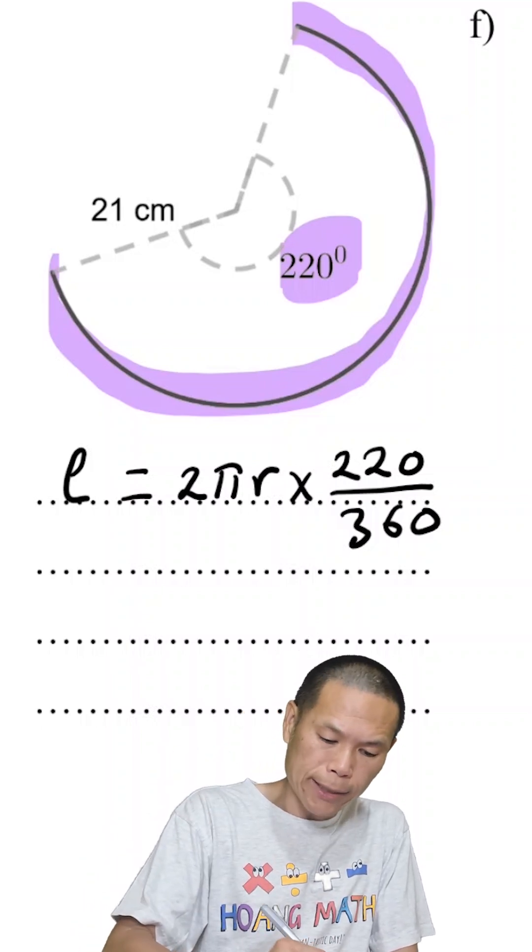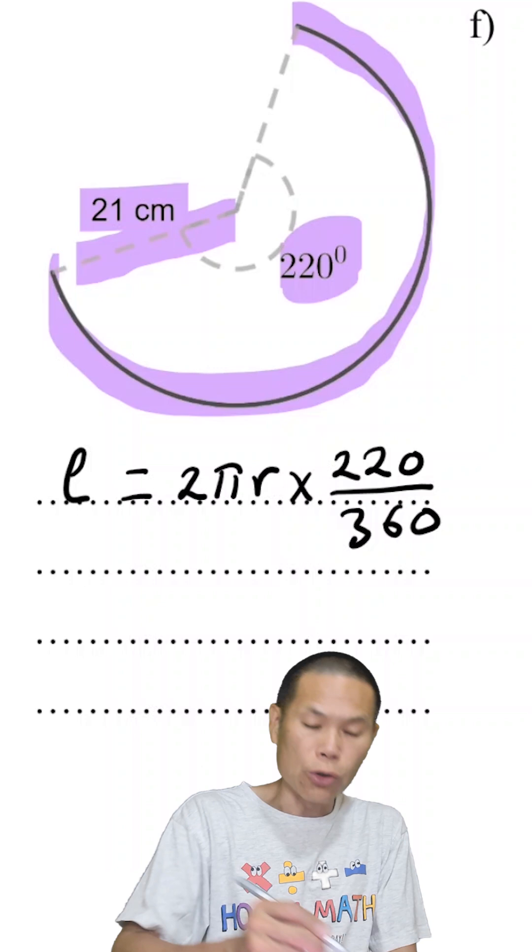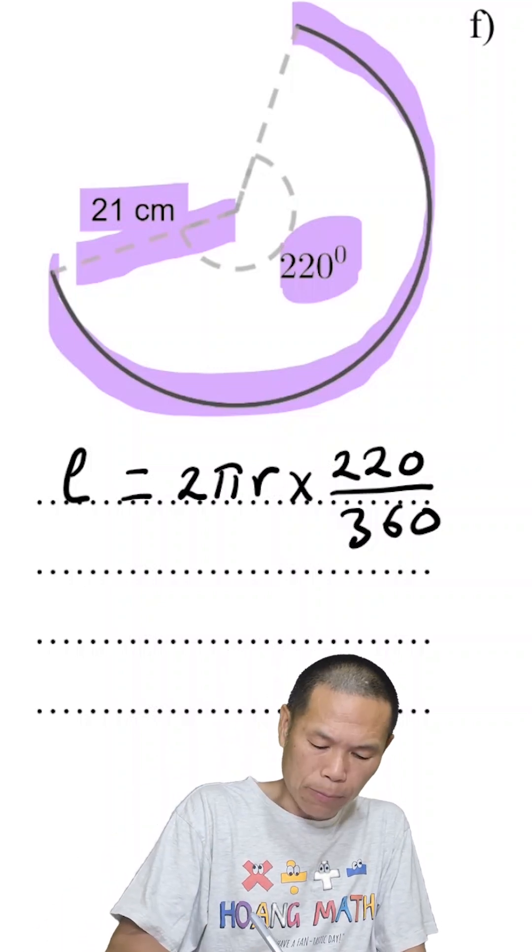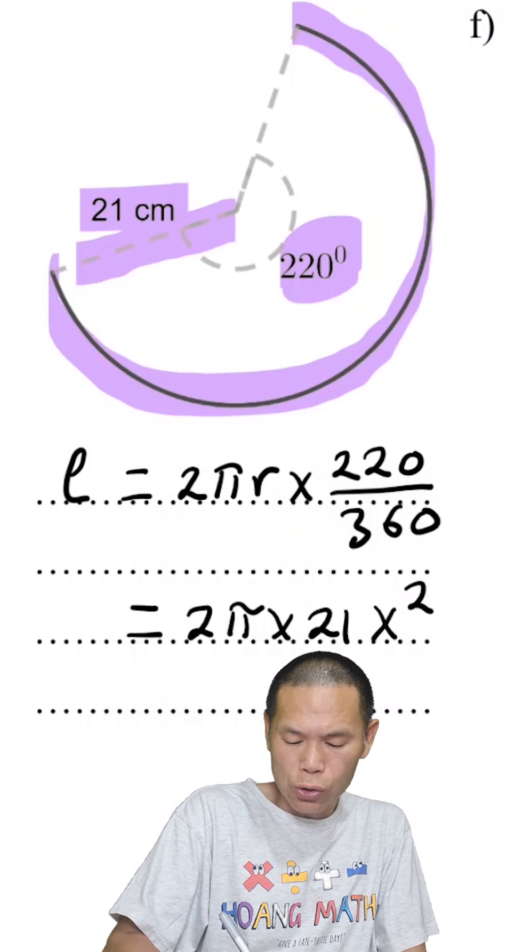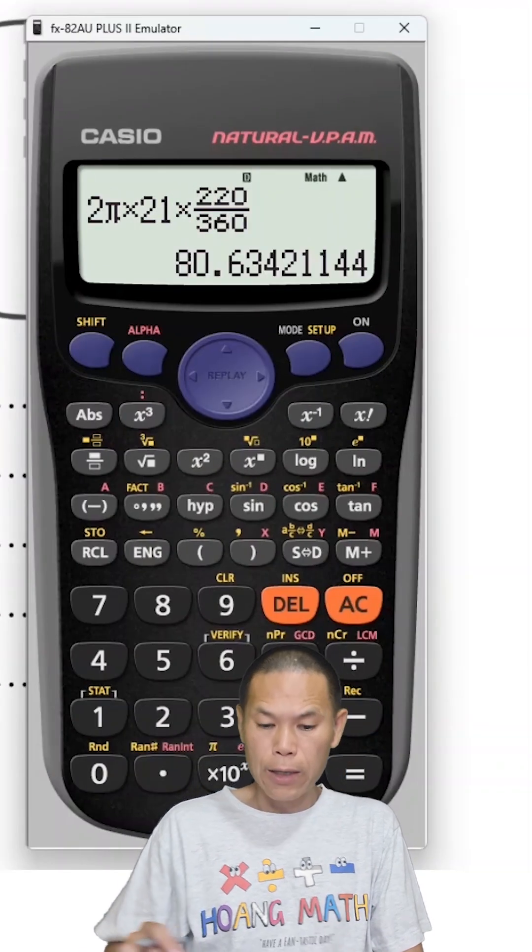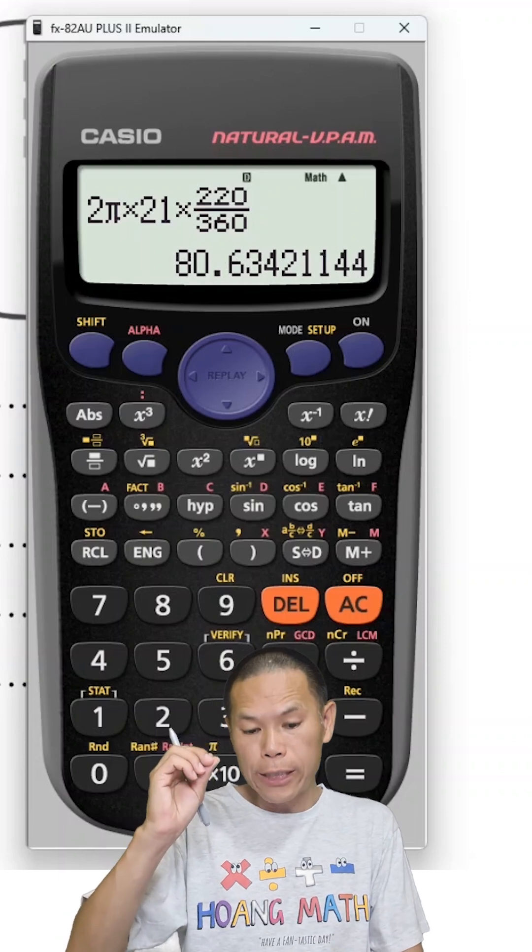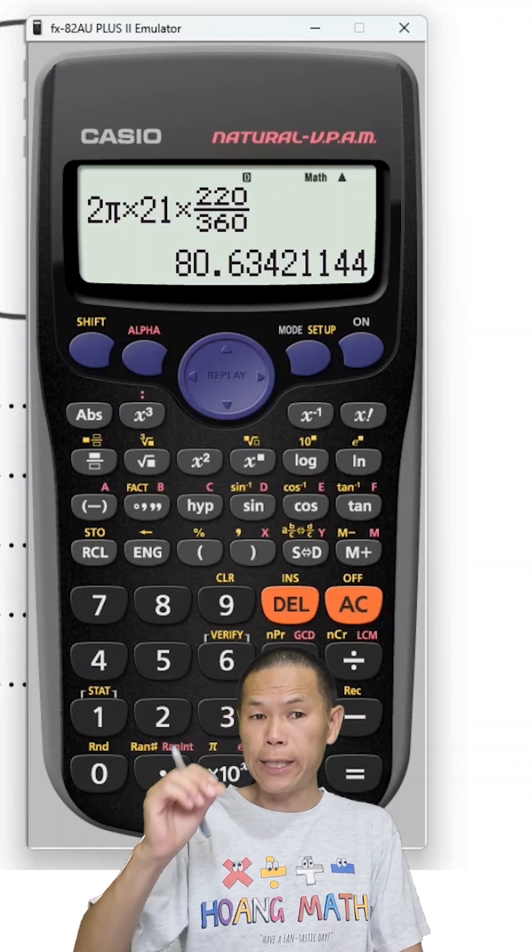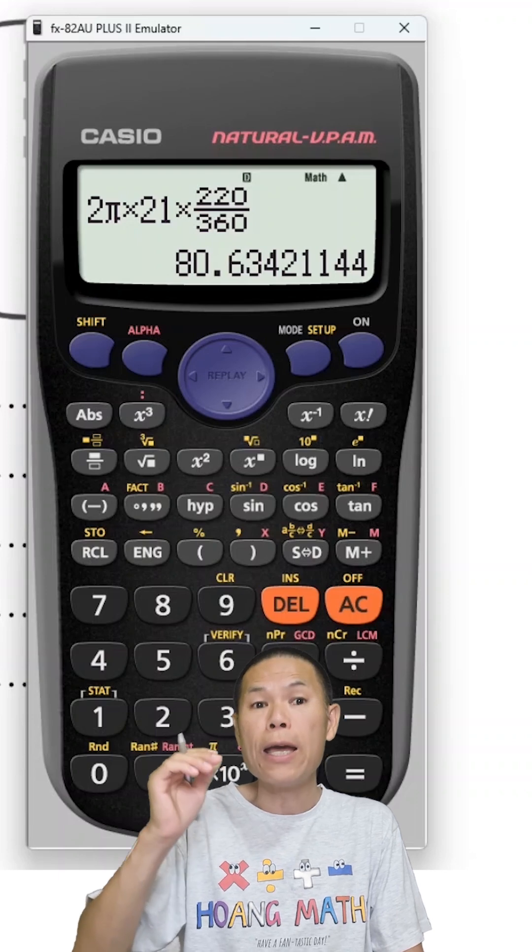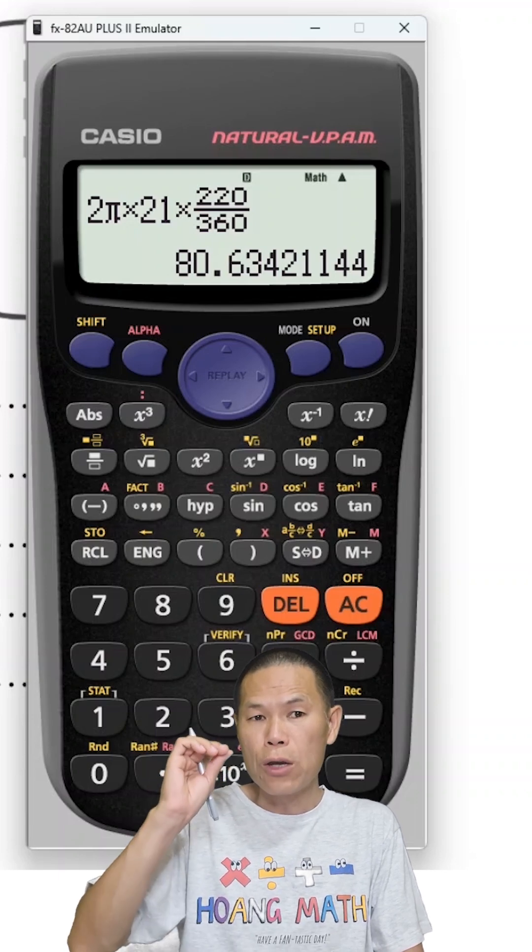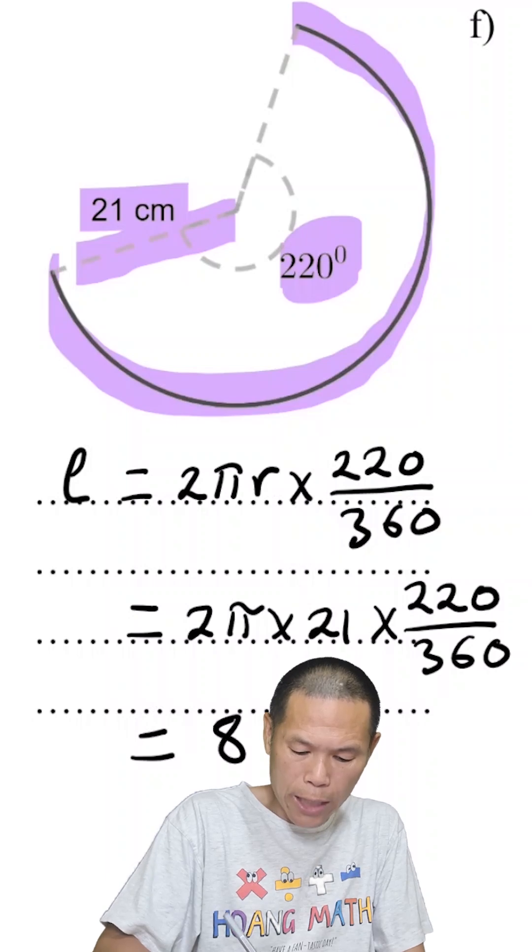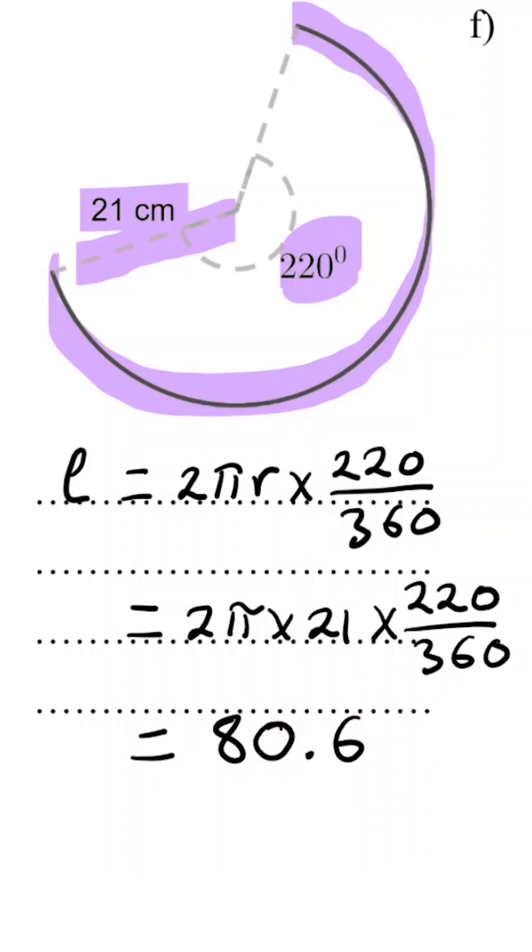21 centimeters, that is the radius. So r equals 21, and we substitute that in. That will give me 2π, so there you go, 80.63. So the answer is 80.6 because the number after 63 is less than 5, so therefore we just write 80.6. So 80.6 centimeters.